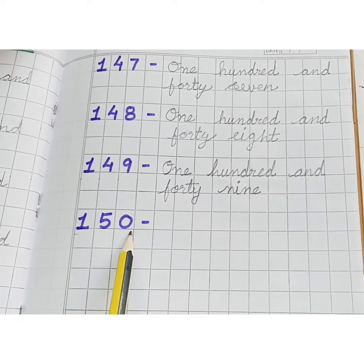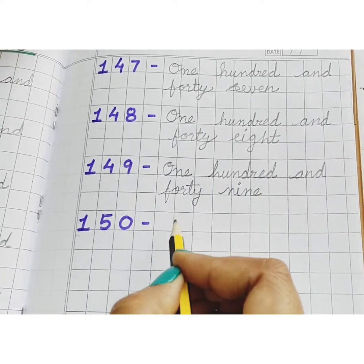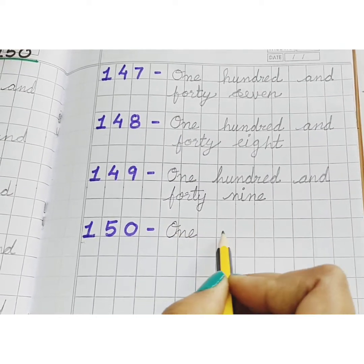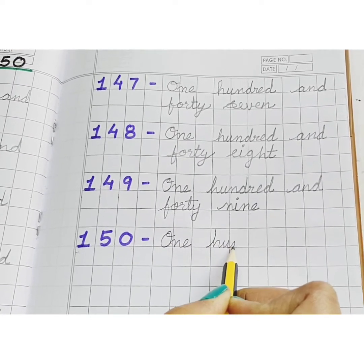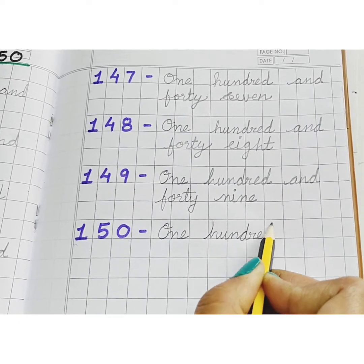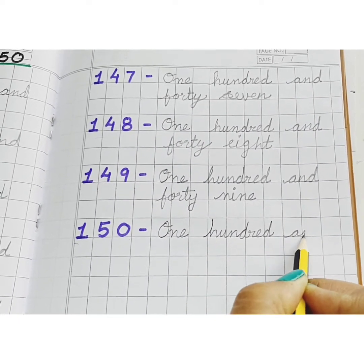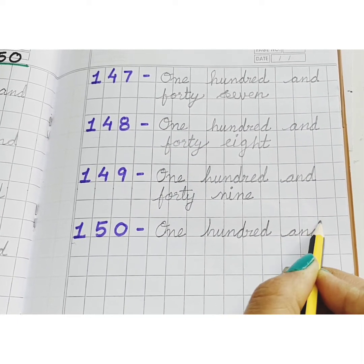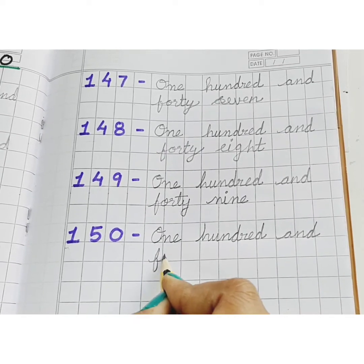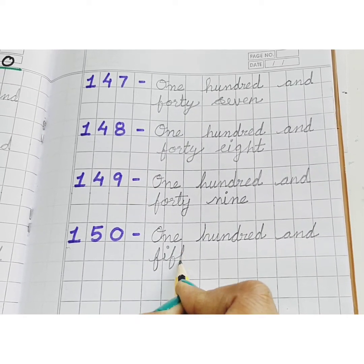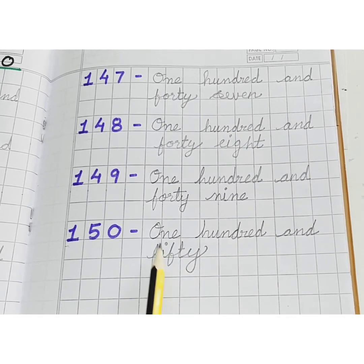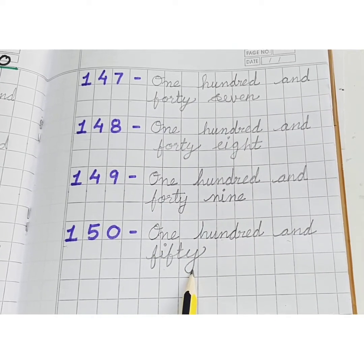150. O, N, E — ONE. H, U, N, D, R, E, D — ONE HUNDRED. AND F, I, F, T, Y — FIFTY. 50. One Hundred and Fifty. 150.